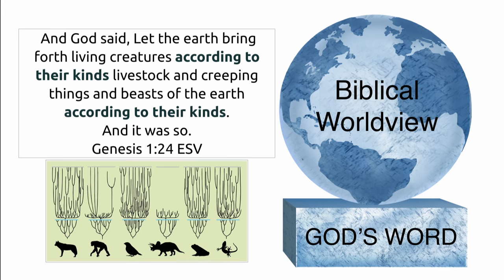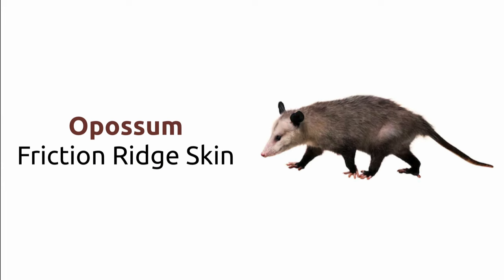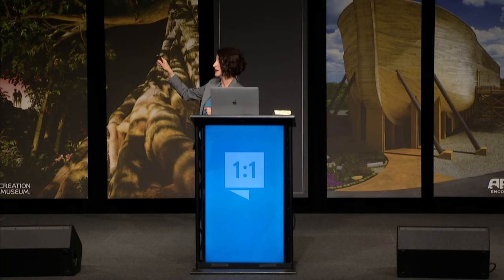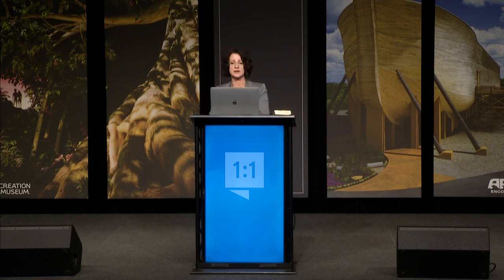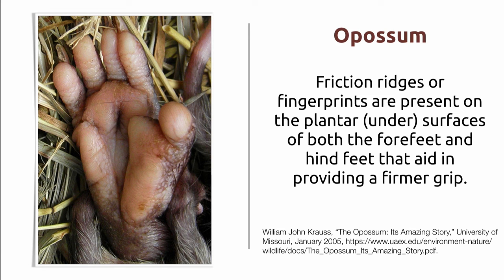Koalas aren't the only marsupial with raised friction skin and fingerprints — the opossum does as well. They do have raised friction skin with a beautiful whorl pattern, and no two opossums have the same fingerprint patterns. What's distinctly different about an opossum is that they have raised areas on their paws and only have a pattern on the tips of those raised areas and the tips of their fingers — not quite the level of detail we have on the entire surface. Friction ridges are present on the undersurfaces of both fore and hind feet, aiding in providing a firmer grip — a non-slip surface that would greatly benefit this creature since they climb and hold their food.